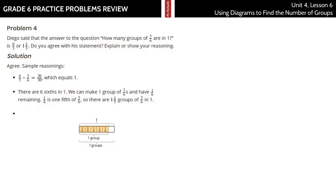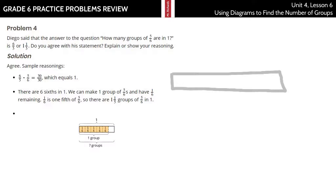Problem 4. Diego said the answer to the question 'how many groups of 5/6 are in 1' is 6/5, or 1 and 1/5. Do you agree or disagree? Spoiler alert — we're going to agree. Let's redraw these diagrams to visualize it. This represents 1 whole unit. Let's break this down into 6ths by drawing 5 lines — 1, 2, 3, 4, 5.